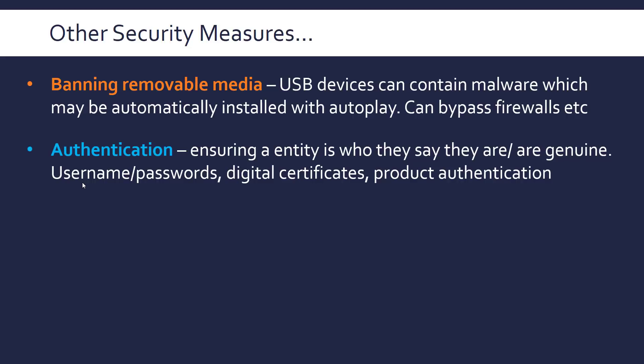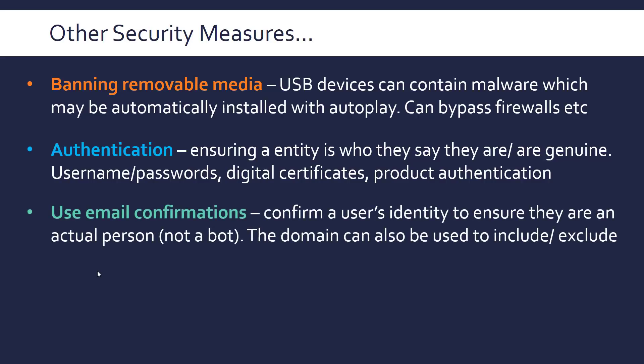A second measure is authentication — ensuring somebody or an entity is who they say they are. This covers username and passwords, and digital certificates which verify that a website is who they claim to be, having been issued a certificate by an authorising agency. It also includes product authentication — for example, plugging a non-genuine cable into an iPhone triggers a warning, and pirated software is labelled as unauthentic. A subset of this is email confirmation, which helps confirm someone's identity and ensures they are an actual person. You can also use it to include or exclude users, such as restricting accounts to those with an academic email domain.